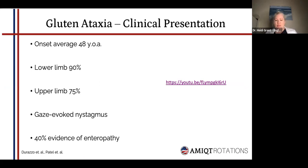In terms of how patients with gluten ataxia will present, the average age is about 48, somewhere between 48 and 55 is when they'll present. It affects the lower limb 90% of the time, and also the upper limb — meaning both are affected most of the time. You'll also see some eye changes — the main one is gaze-evoked nystagmus, but it'll also affect saccades.